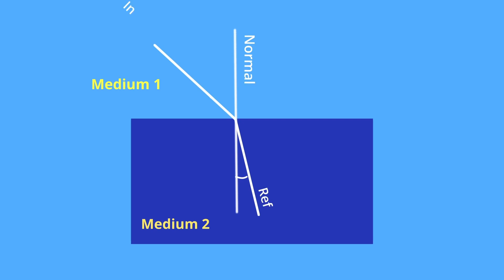Here, the ray in medium 1 is the incident ray and the ray in medium 2 is the refracted ray. The angle between the incident ray and normal is called the angle of incidence, represented by I.